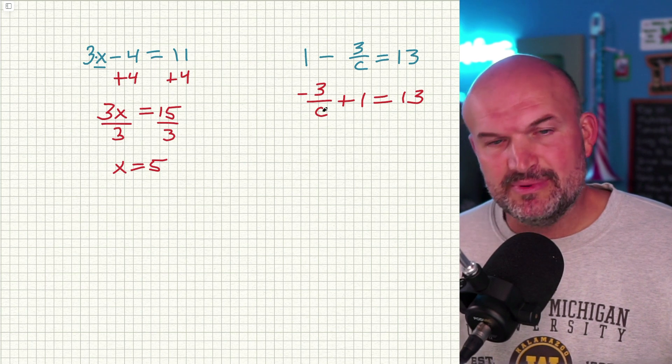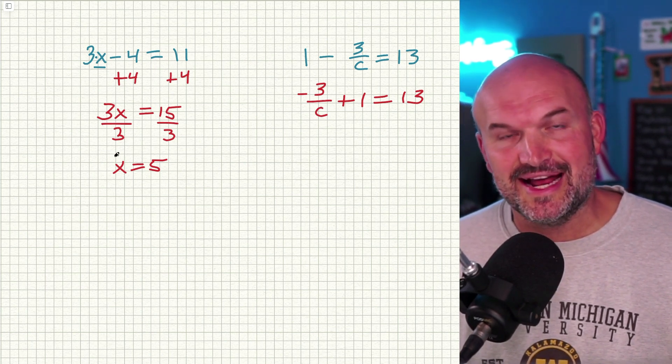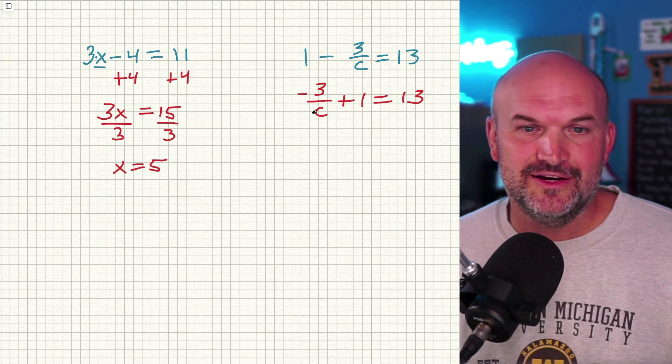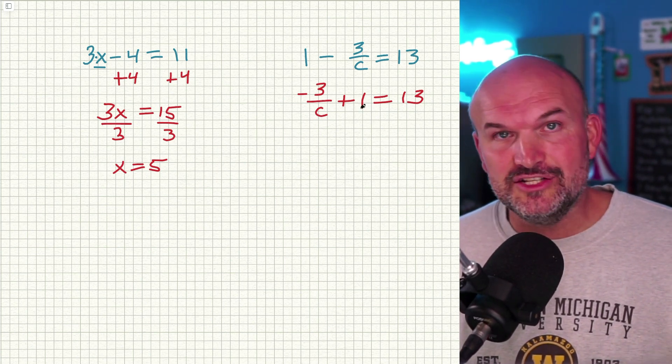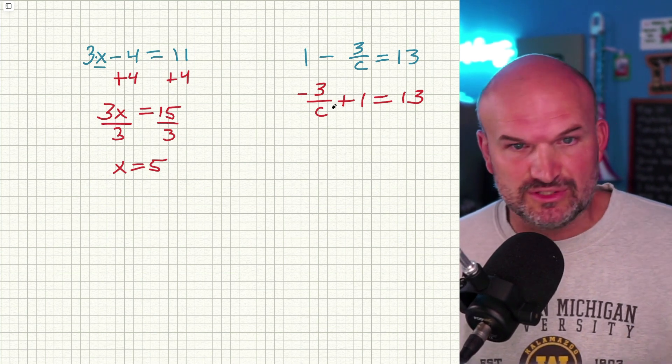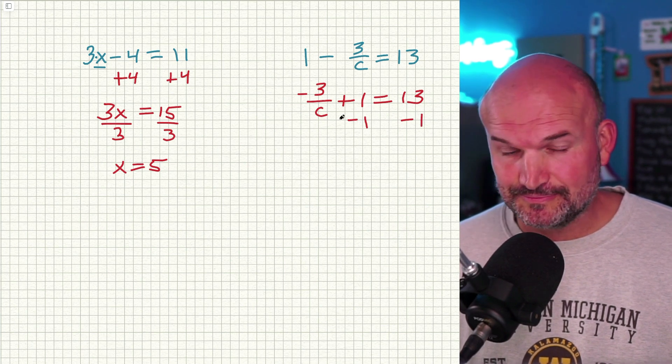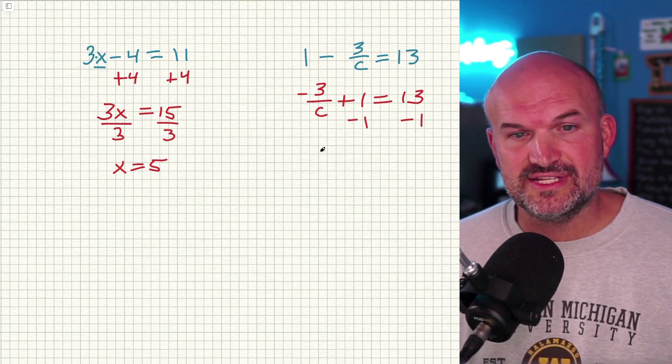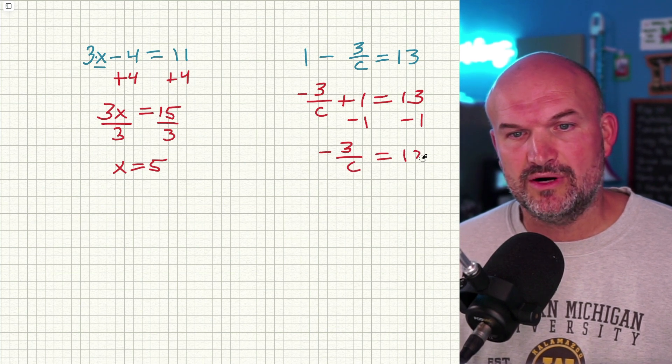Now, when we want to solve for a variable, we can't have the variable in the denominator. You can see this was not in the denominator, so we didn't have to worry about it. So over here, we have to get it off the denominator. But before I have to worry about that, I understand I can undo my addition here. I need to undo addition before I deal with what's going on here anyways. So first step I'm going to do is subtract one on both sides. So that's going to give me -3/C = 12.